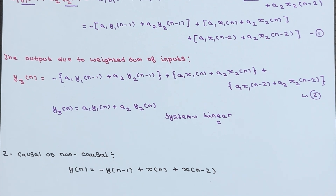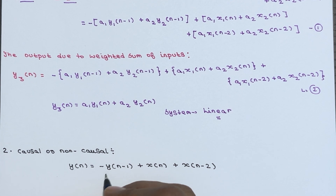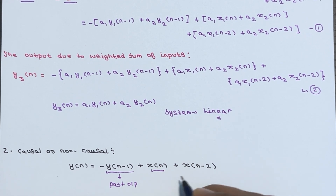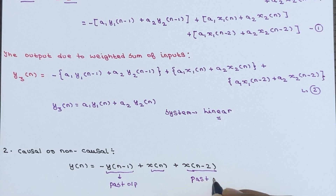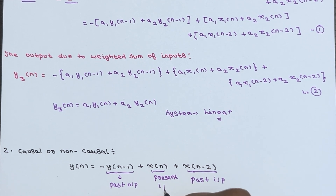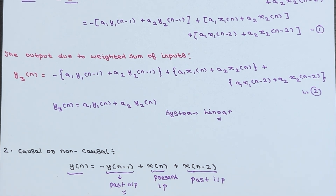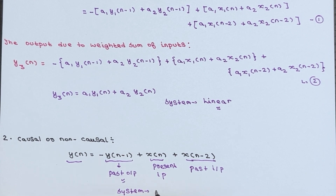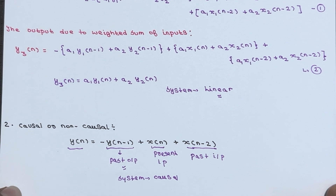Now let's check causal or non-causal. Looking at the equation y(n) = -y(n-1) + x(n) + x(n-2): y(n-1) is past output, x(n) is present input, and x(n-2) is past input. The output depends upon present and past inputs and past output. So the system is a causal system.